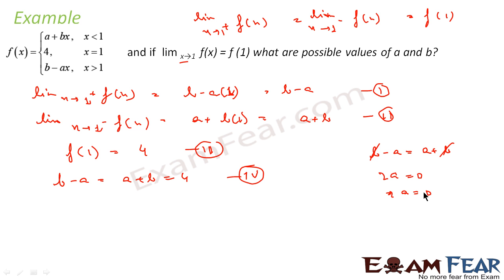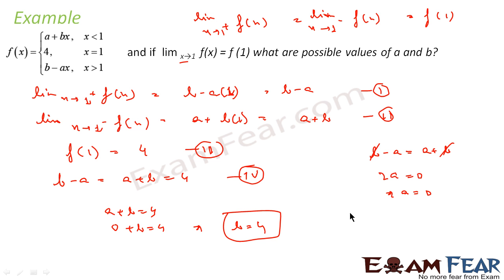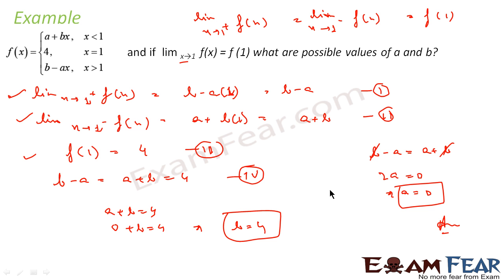So we have got the value of a. Now we will use the equation a plus b equals 4. Since a is already 0, we get 0 plus b equals 4, so b is equal to 4. We have two values: b is equal to 4 and a is equal to 0. Very simple. We were told that the left hand limit, right hand limit, and the value of the function f(1) are equal, so we equated them to get the answer.